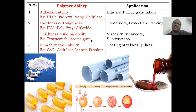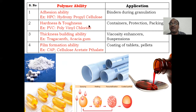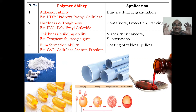Hardness and toughness — some polymers are very hard and tough, like polyvinyl chloride. PVC pipes, which we commonly use for drainage or water supply, are very hard and tough. PVC — polyvinyl chloride — is also used for containers such as suspension bottles and emulsion bottles.